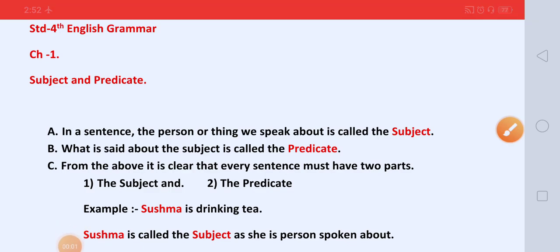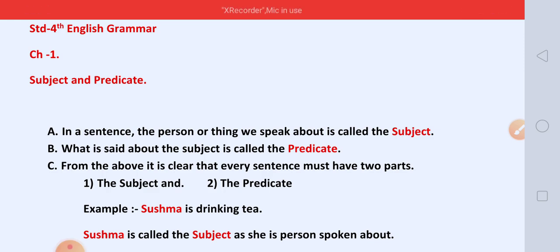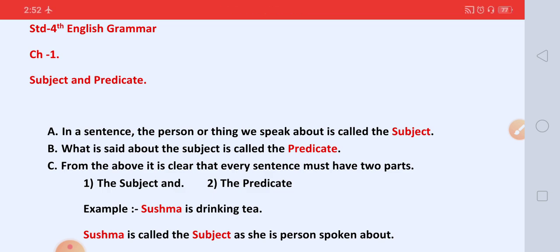Hello students, how are you? I hope you all are fine. Students, we completed Standard 4th English Unit No. 12, right? So today onwards, we start Standard 4th English Grammar. So let us learn Chapter No. 1, Subject and Predicate.